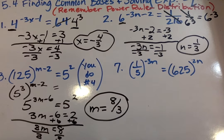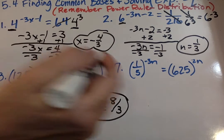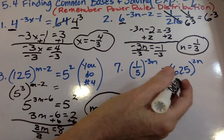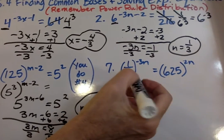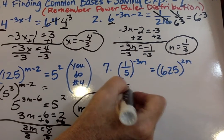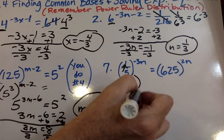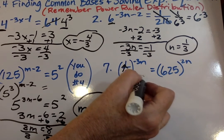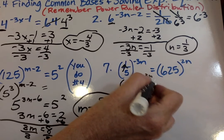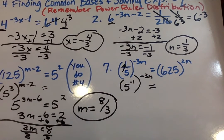All right. Let's do number 7. Oh dear. There's not a 5. We've got kind of related to 5. Because 5, 1 fifth, if it moves upstairs, 5 to the negative 1. Multiply that with negative 3n. And 625.